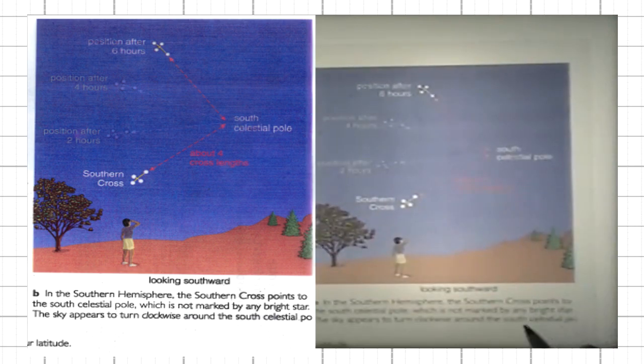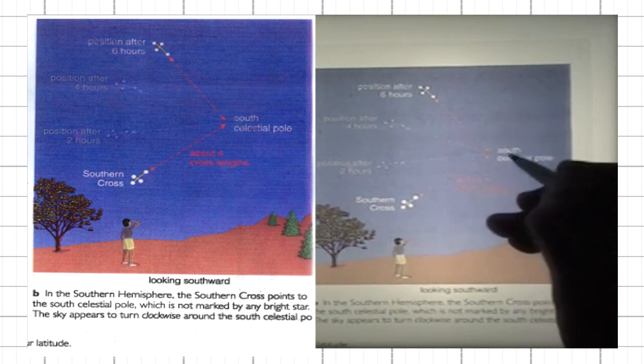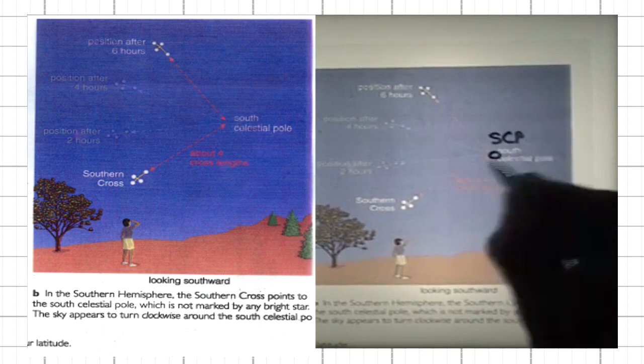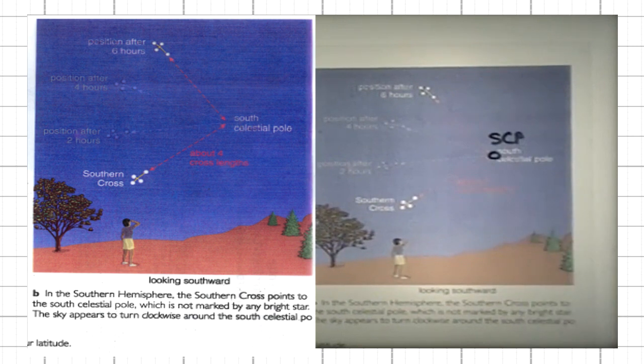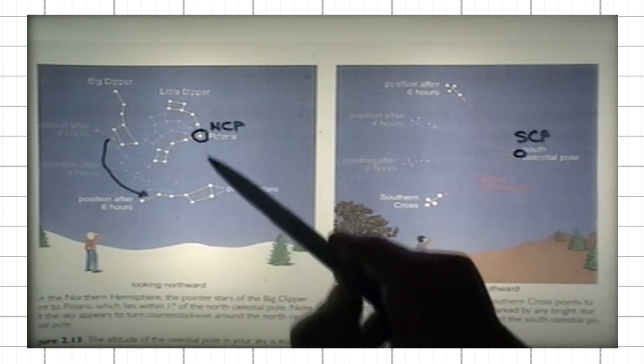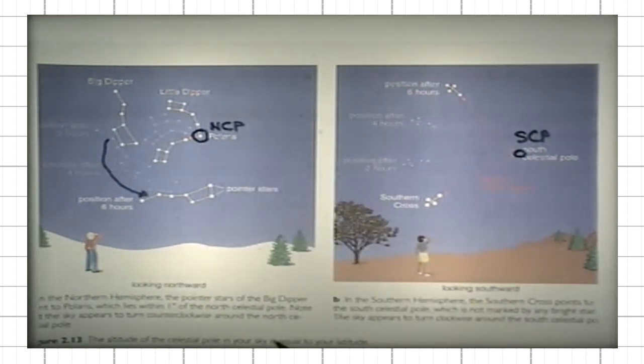At the same time, in the southern hemisphere, there is South Celestial Pole somewhere here, but there is no star that is located very close to the South Celestial Pole. We are fortunate that we live at times where there happens to be a star, the North Star or Polaris, that is very close to the location of the North Celestial Pole.